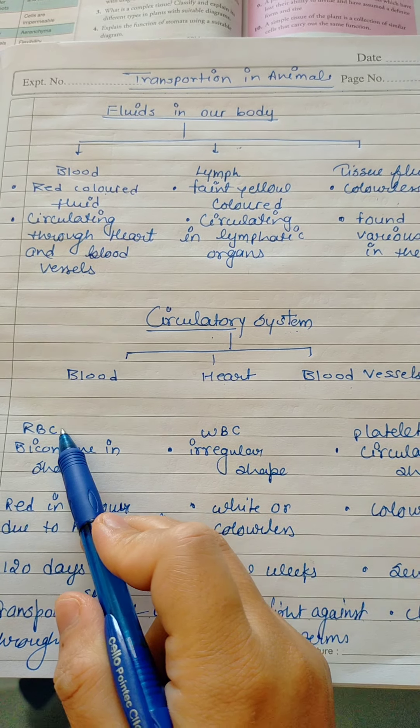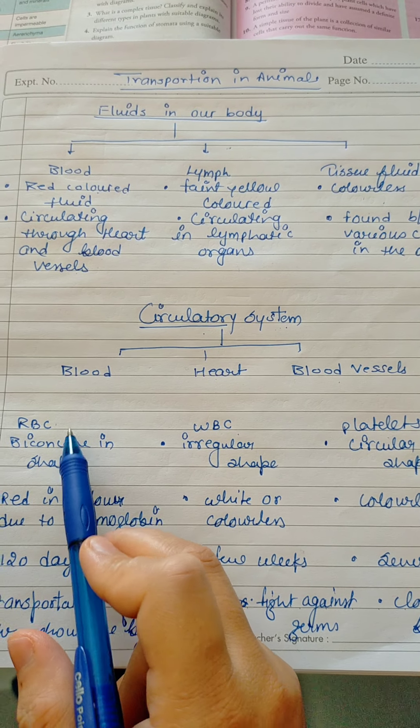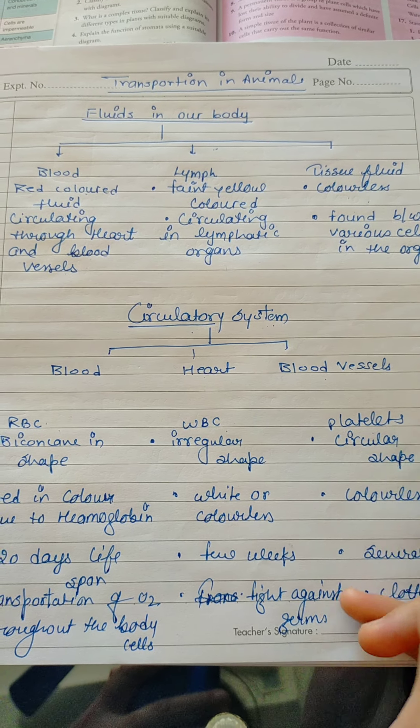Now, come to the difference between RBC, WBC, and platelets. RBCs are red blood cells, white blood cells, and platelets are the thrombocytes.